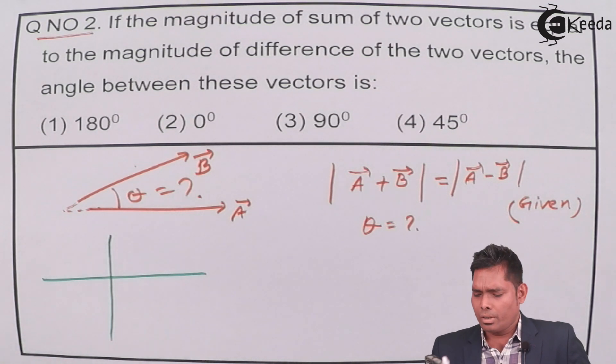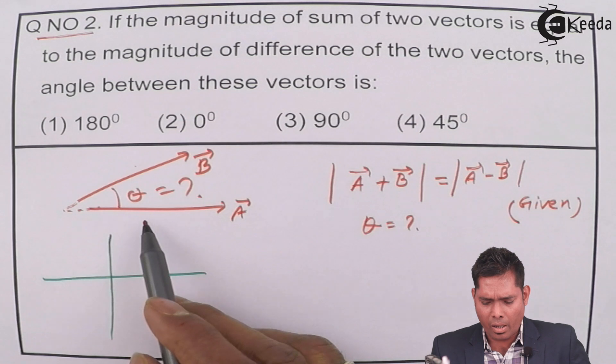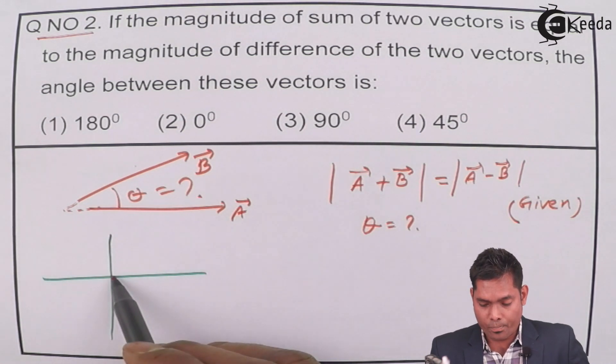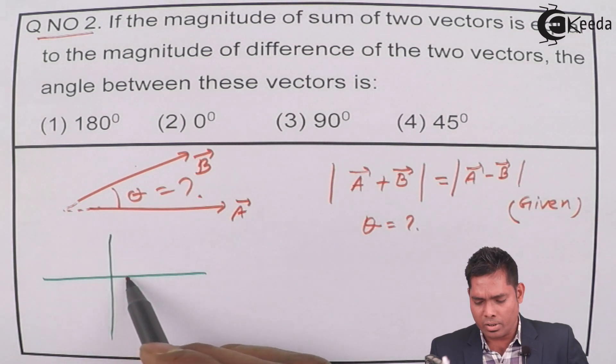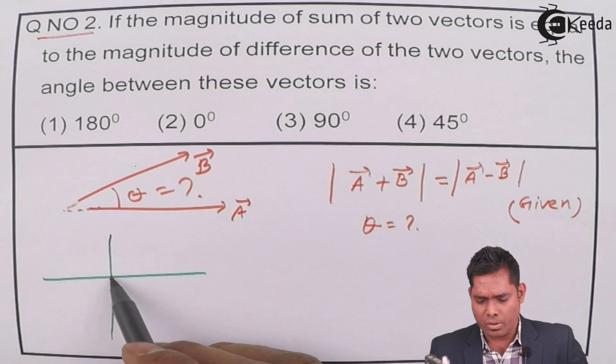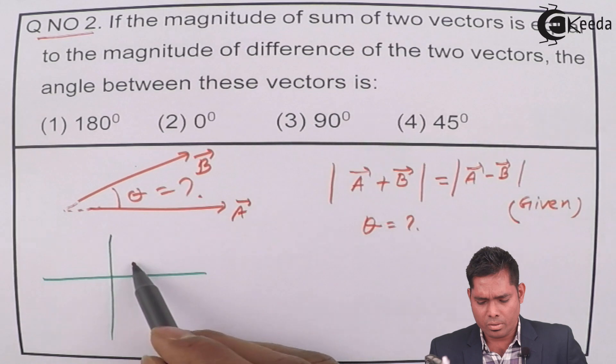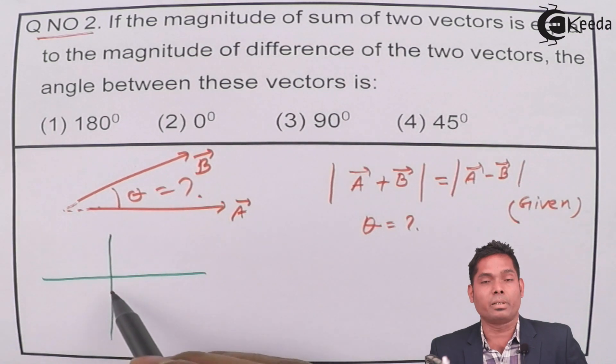I know that if I have any vectors A and any vector B, so if I take particularly vector A in this direction, and vector B in this direction, then A plus B will be in this direction, and similarly A minus B will be in this direction, and the angle will be 90 degrees.